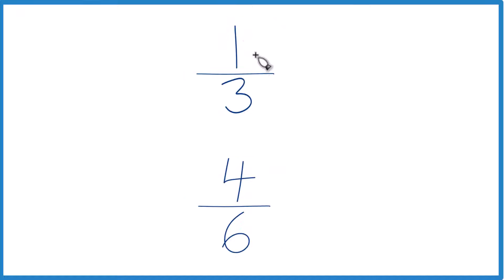So the first way, you could just divide 1 by 3 on a calculator, get a decimal, divide 4 by 6, get a decimal, and then compare the fractions.